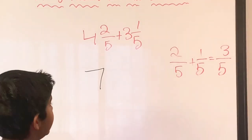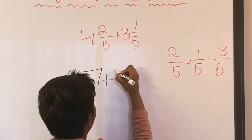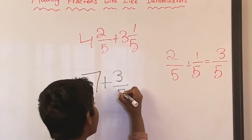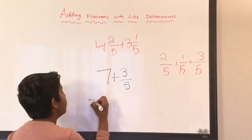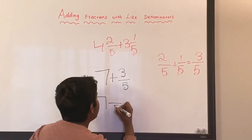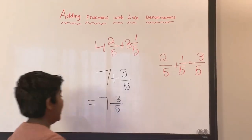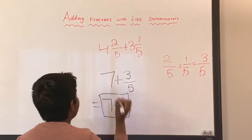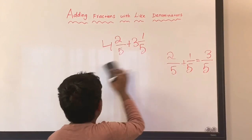So we have seven plus three over five. The answer is seven and three over five.